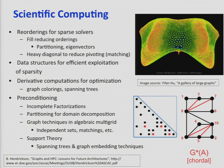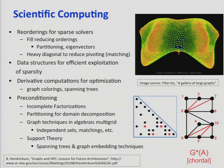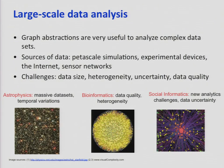In support graph theory, you represent the graph of your matrix — the matrix you're trying to factorize — and you try to approximate that graph with something simpler, which in this case is a tree. That's what it's called, a support tree sometimes.